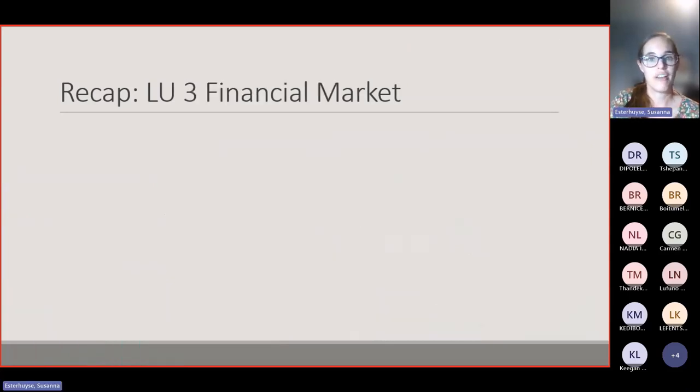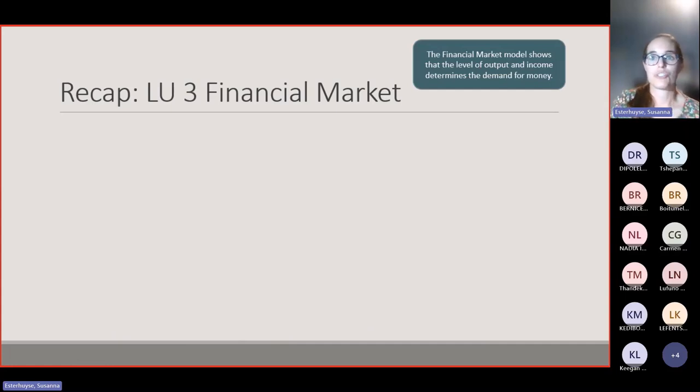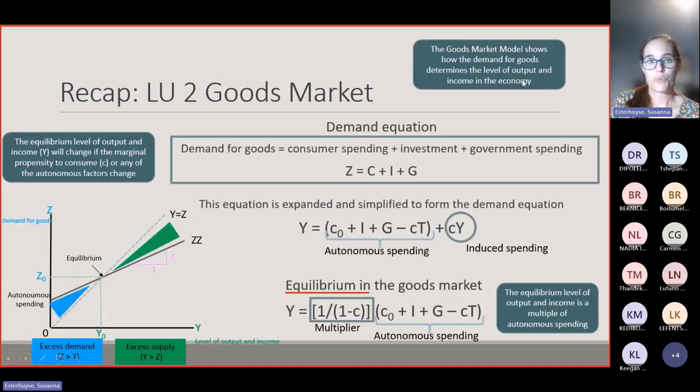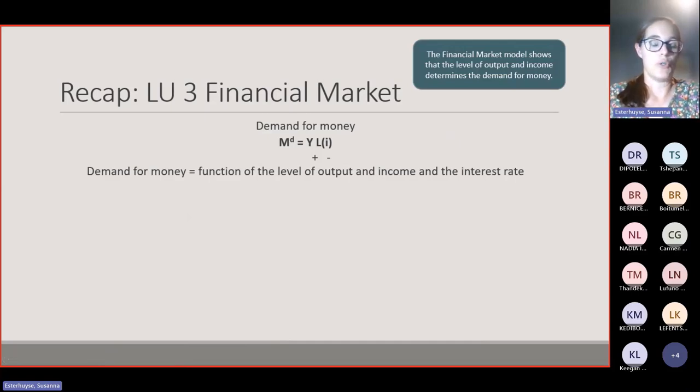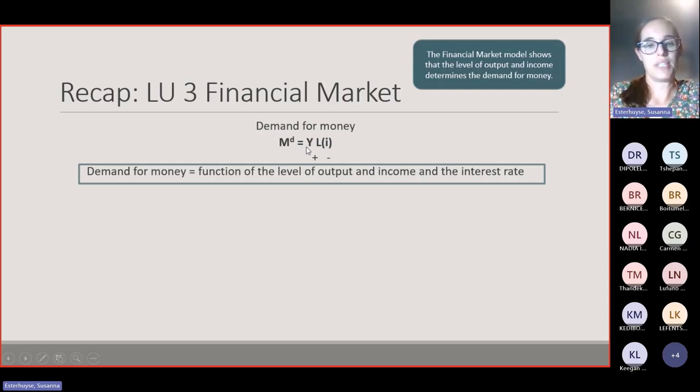Now the recap of the financial market. The financial market shows that the level of output and income determines the demand for money. Remember, in the goods market, demand for goods was determined by the level of output and income. Here, the level of output and income determines the demand for money.